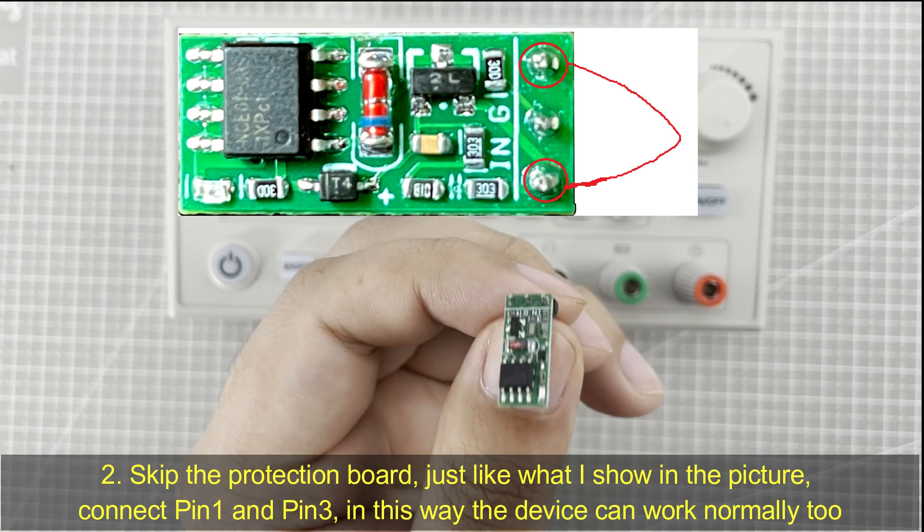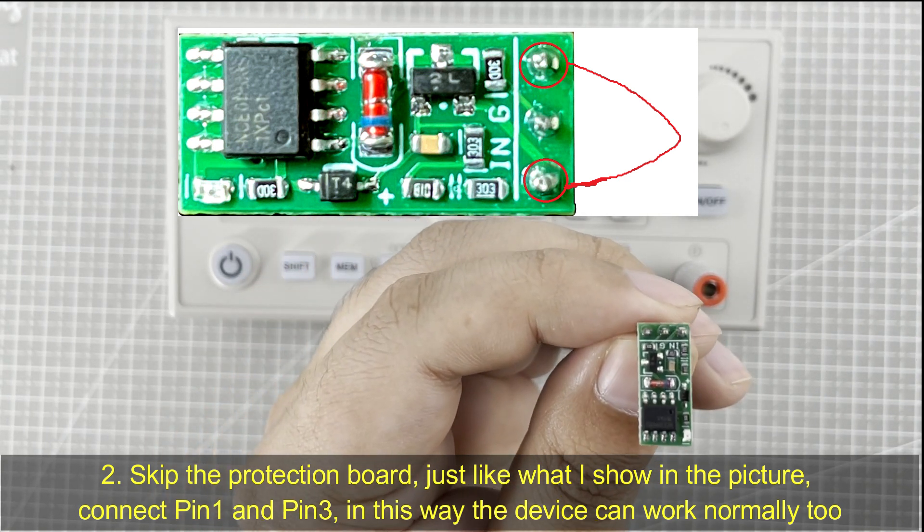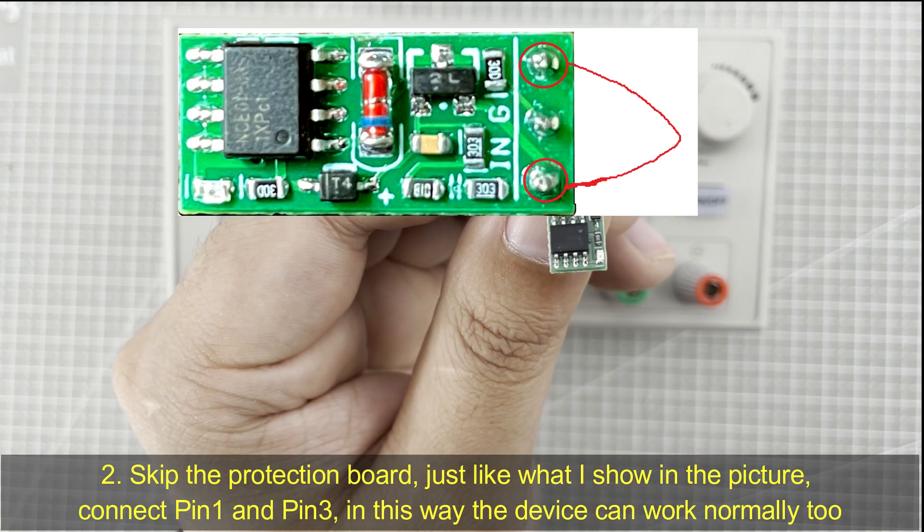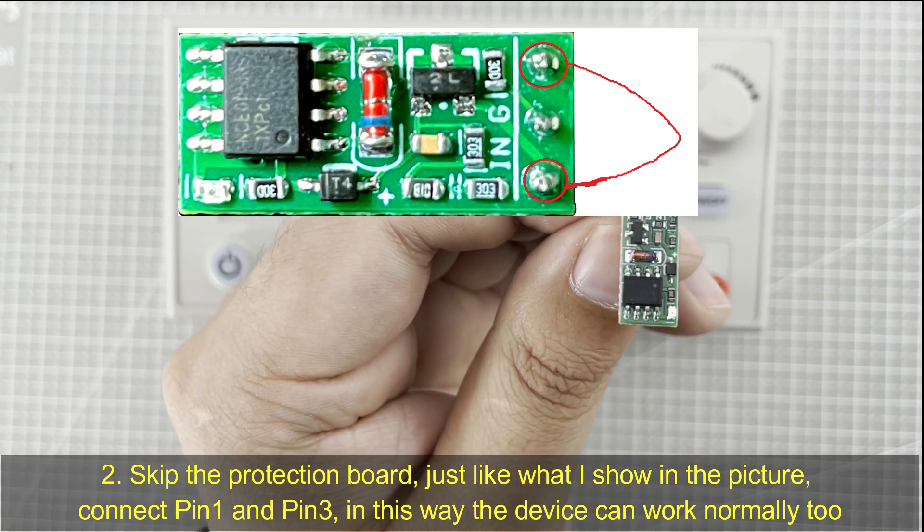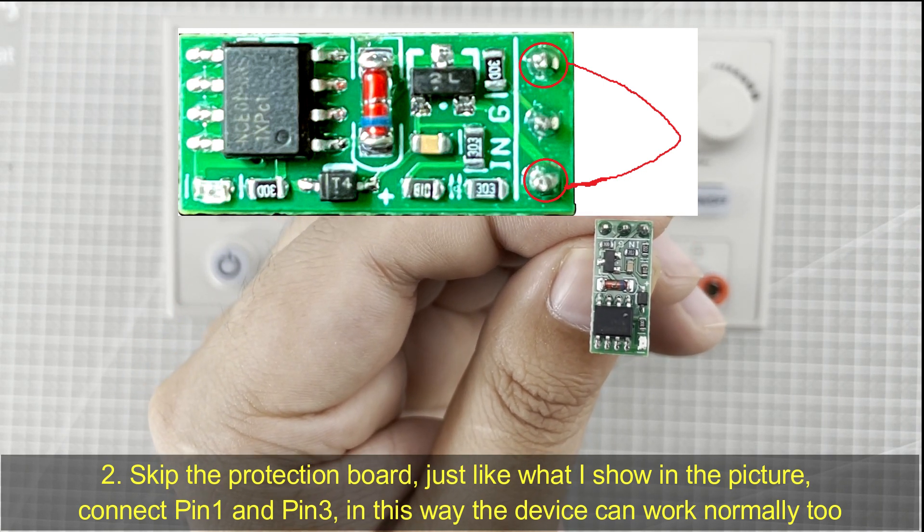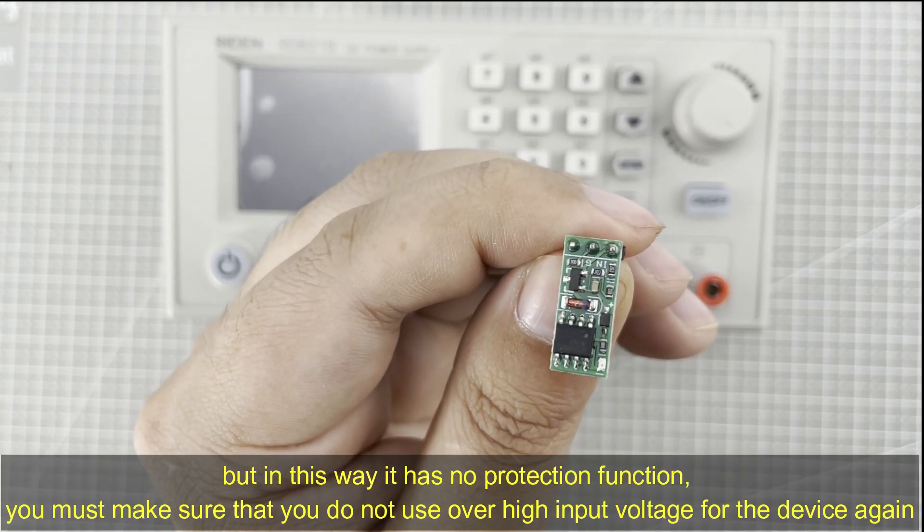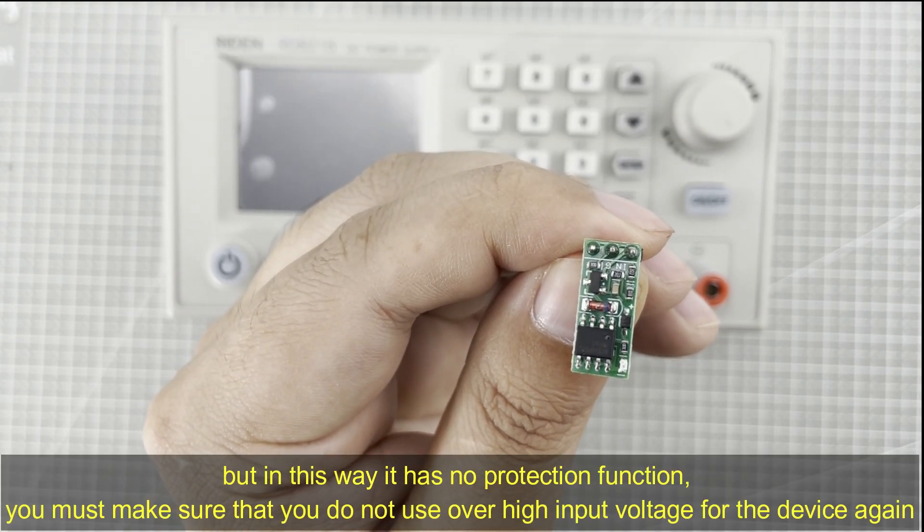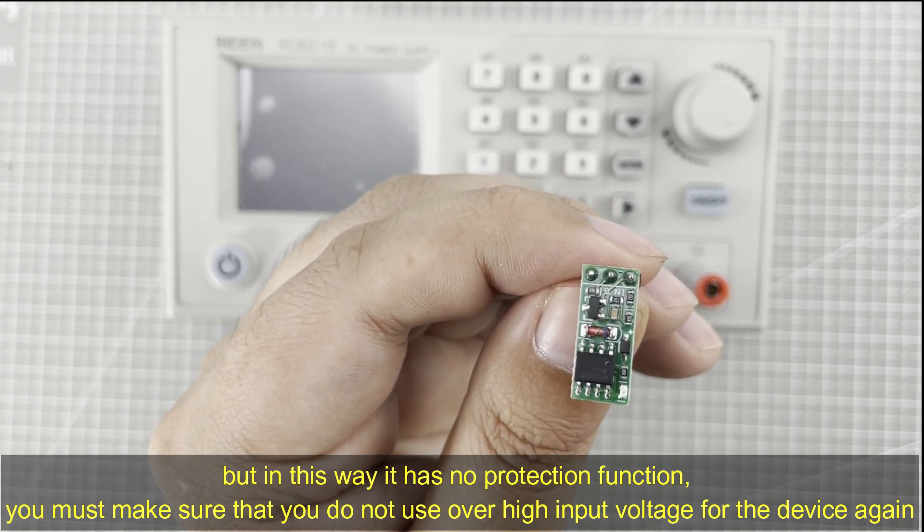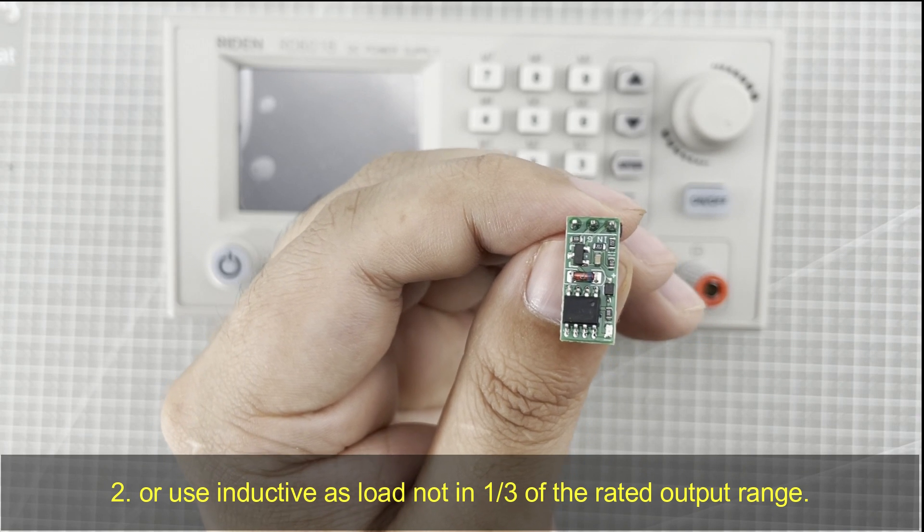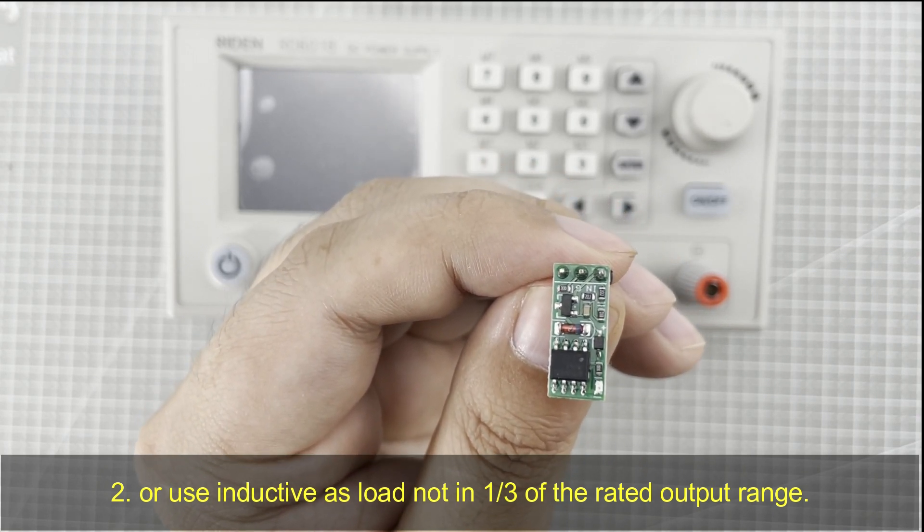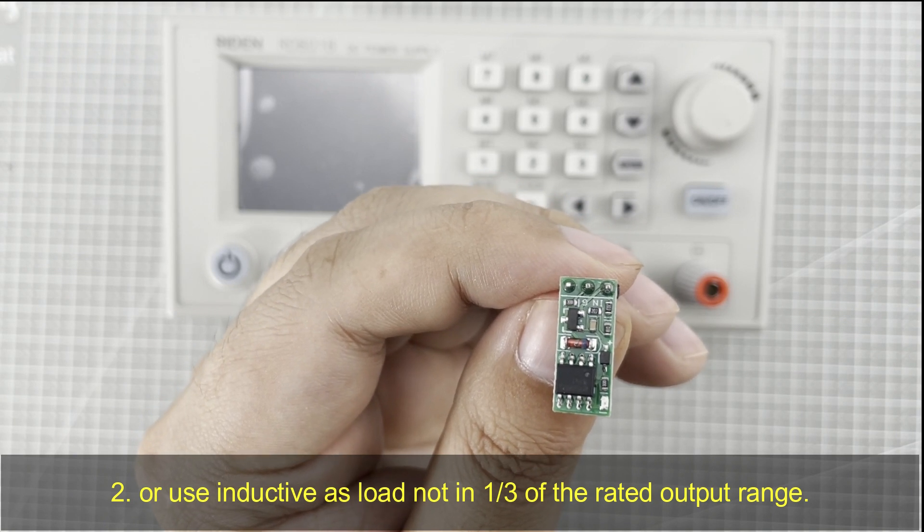Or you can bypass the protection board just like what I said in the video before. You can connect pin 1 and pin 3 of this board so that you can bypass this board and use the power supply normally. But in this way, it has no protection function. You must make sure that the input voltage will not exceed its limit, or you cannot use the inductive load which exceeds one third of its output range.